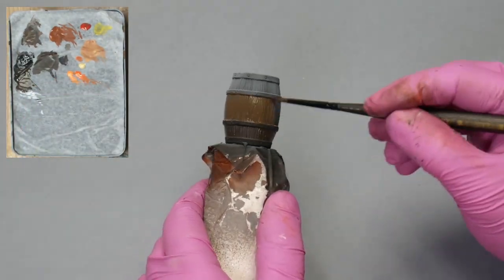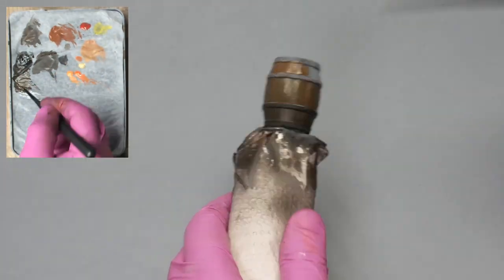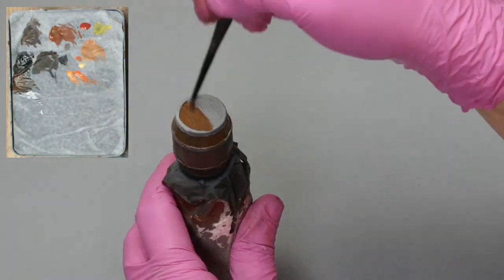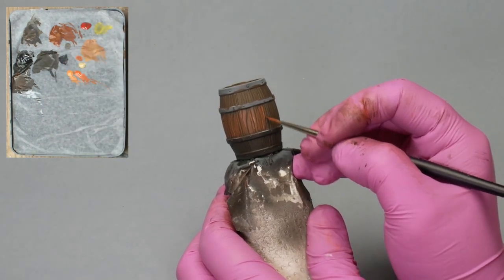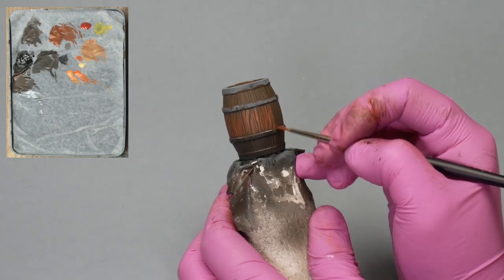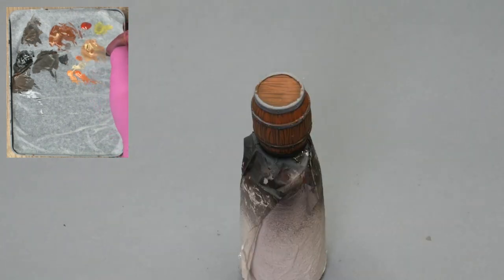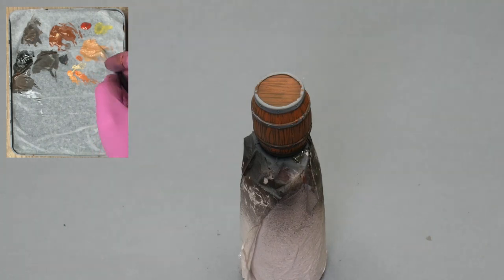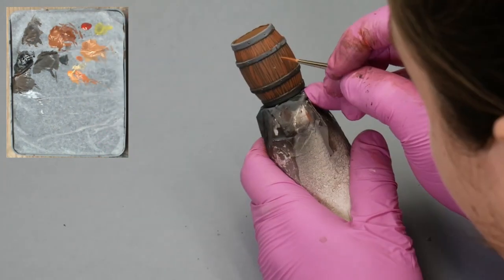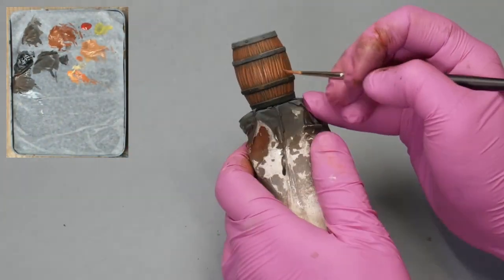The third one. If you have an airbrush, you can apply the base coat with it. Then, use the brush to add the other colors. Light brown, light orange, and beige. In this one, I didn't use the dry brush technique.